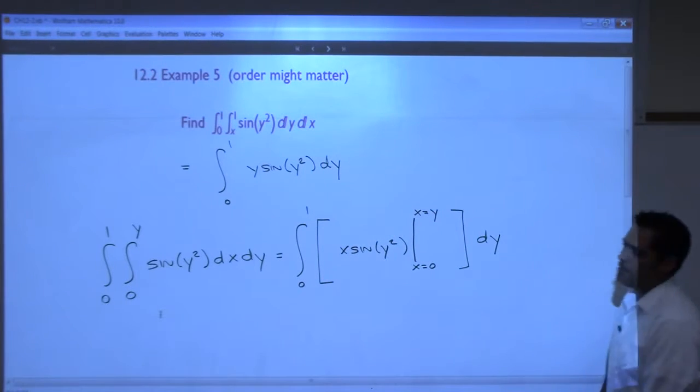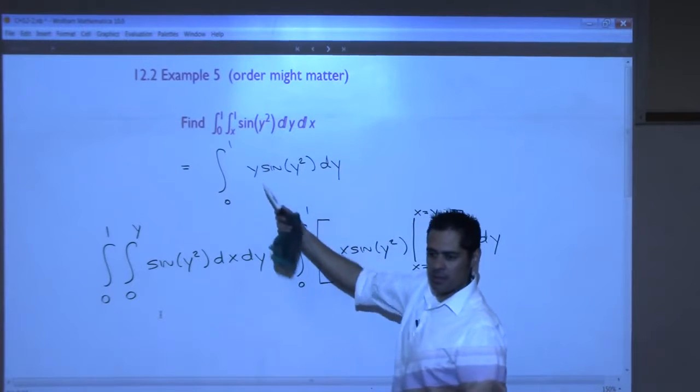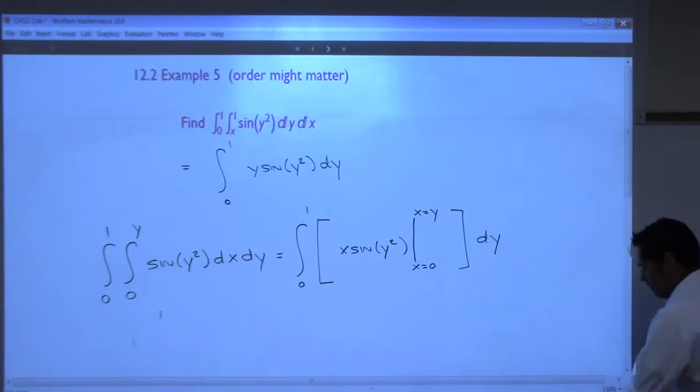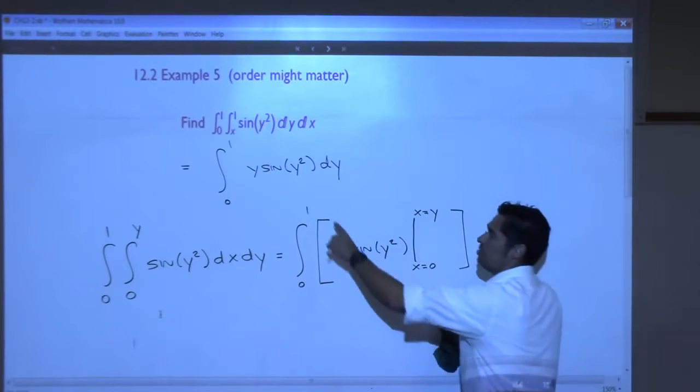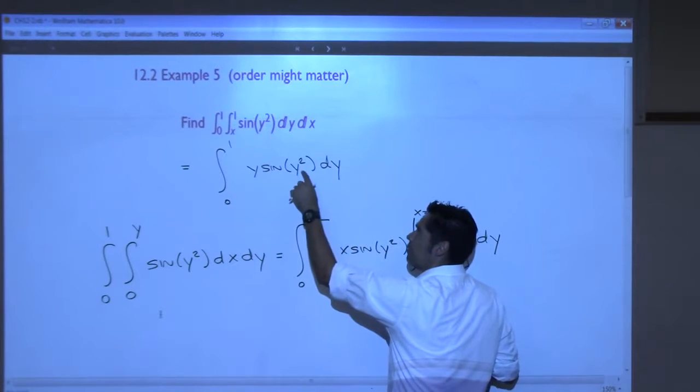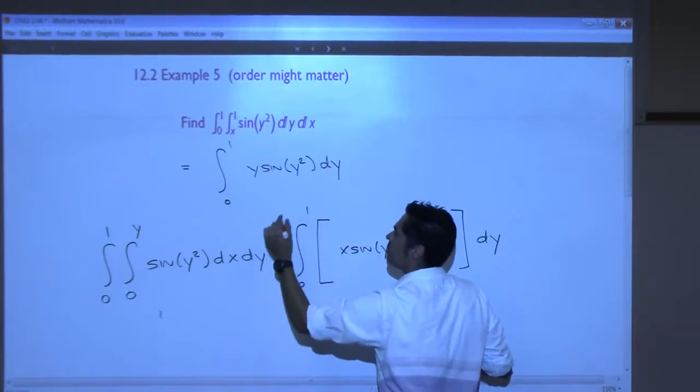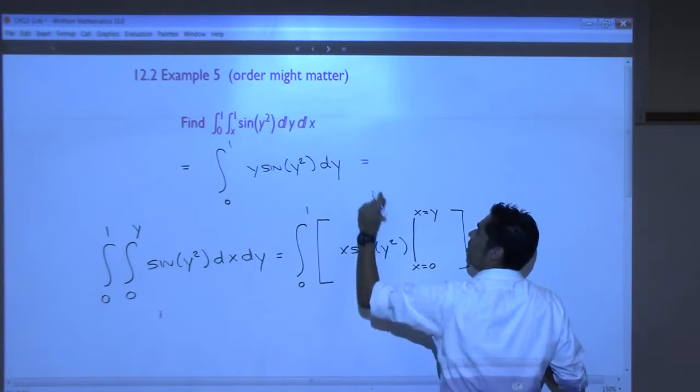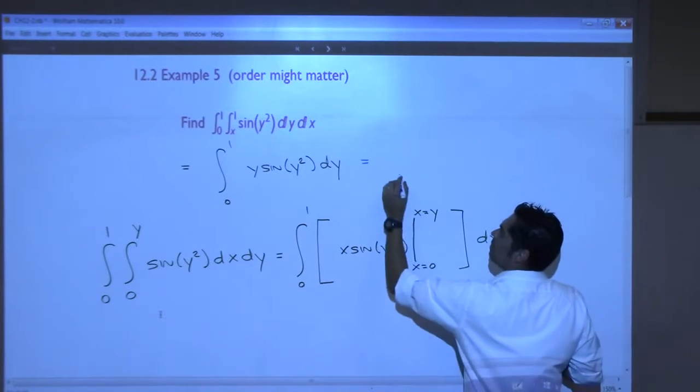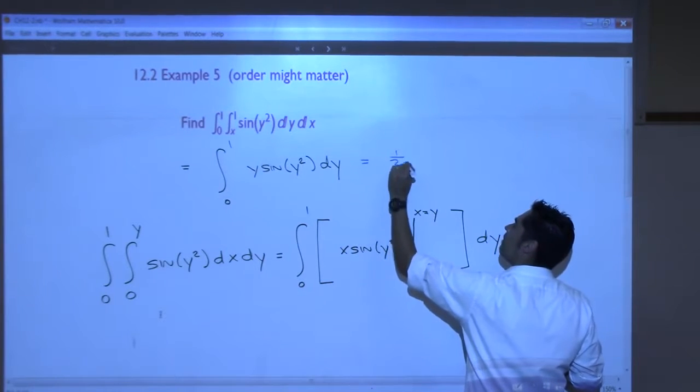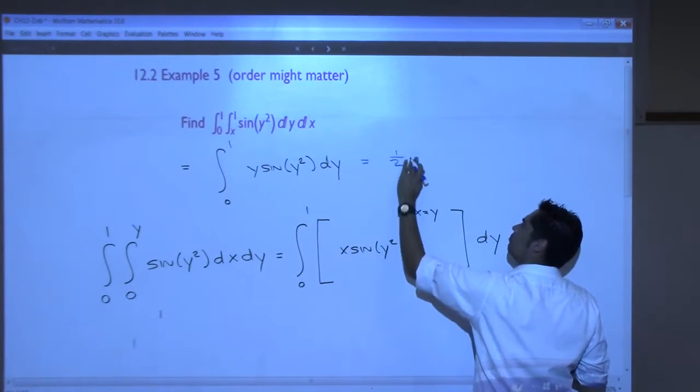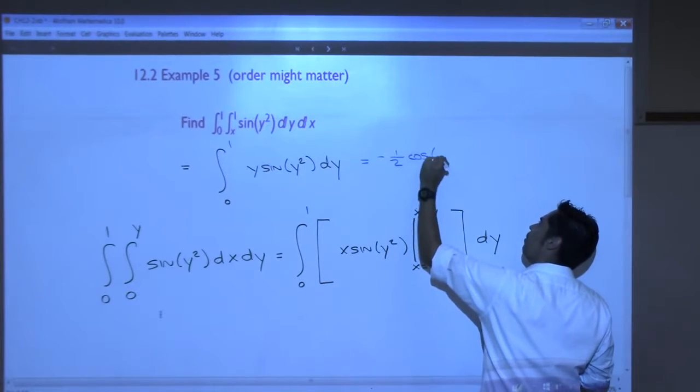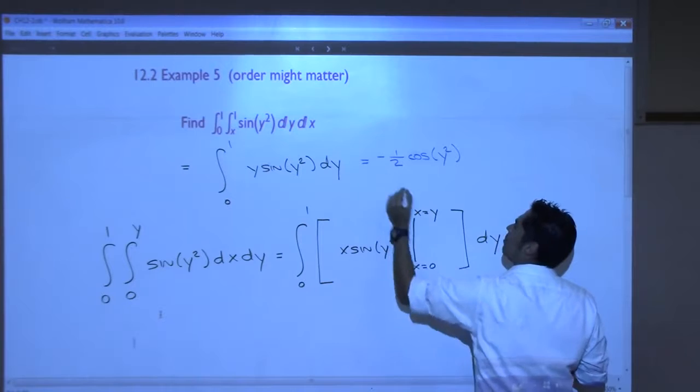Now is that something you can integrate? Yes. That y out front saves you, doesn't it? It's just a basic u substitution. Take this to be u, what's derivative of this? 2y, you've got it basically. So this becomes, I'm not going to go through the integration, I'm just going to expect you can do it on your own. This becomes negative 1 half, cosine y squared. That's your anti-derivative.